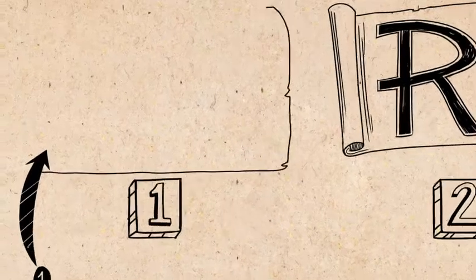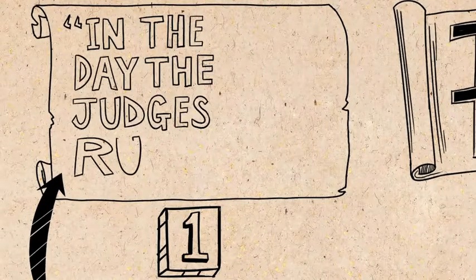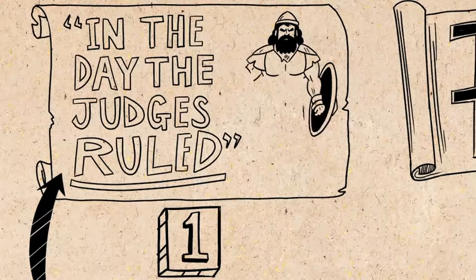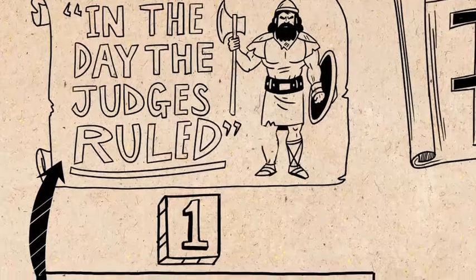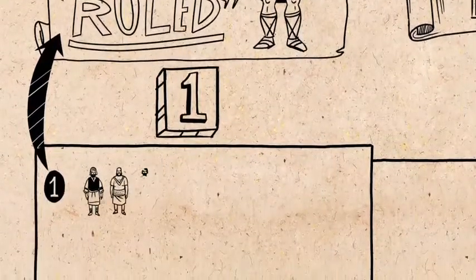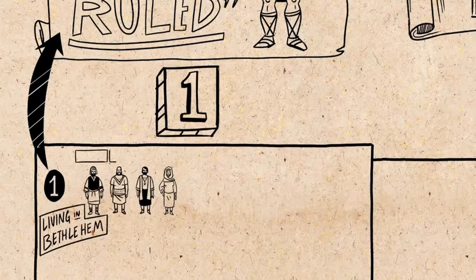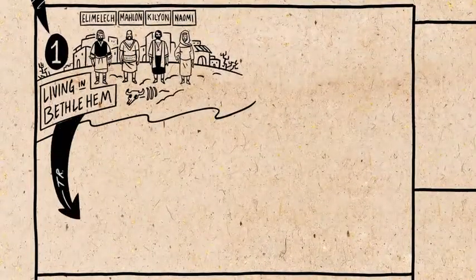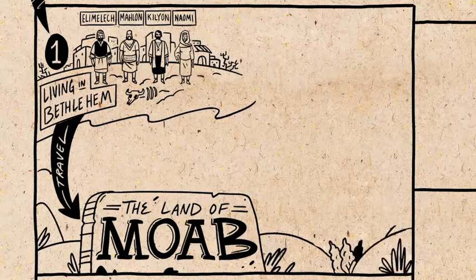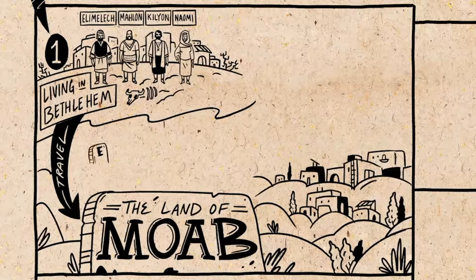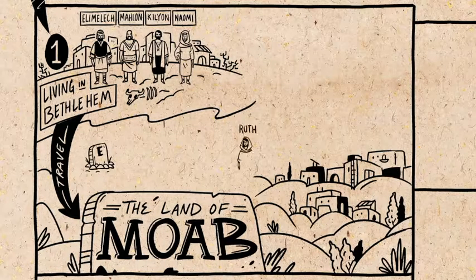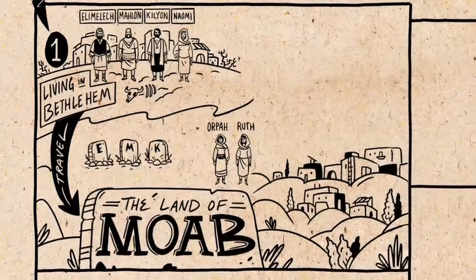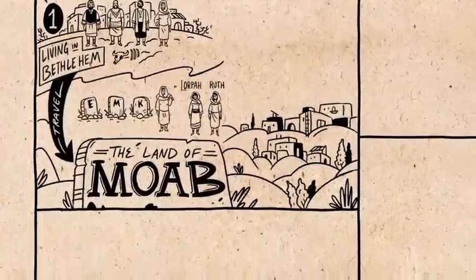Chapter one opens with the line, 'in the days when the judges ruled,' reminding us of the very dark and difficult days from the book of Judges. Here we meet an Israelite family in Bethlehem struggling to survive through a famine. In search of food they move to the land of Moab, Israel's ancient enemy. There the father of the family dies, the sons marry two Moabite women, Ruth and Orpah, and then the sons die too, leaving only Naomi and these daughters-in-law.